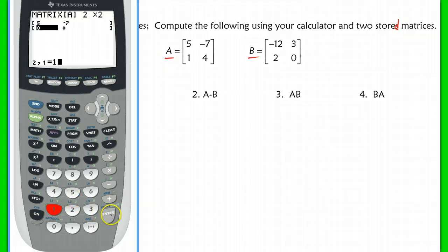Okay, so it goes first row and then second row and so on. Okay, now I want to pull up, I'm going to leave matrix A alone because I already edited it. So I can quit out of this by hitting second mode or second quit and then do the same thing to enter matrix B.